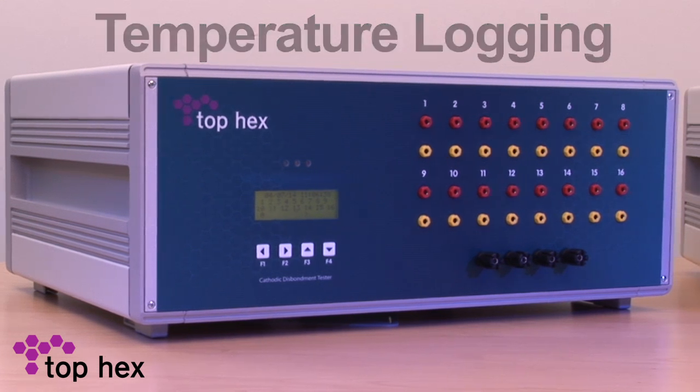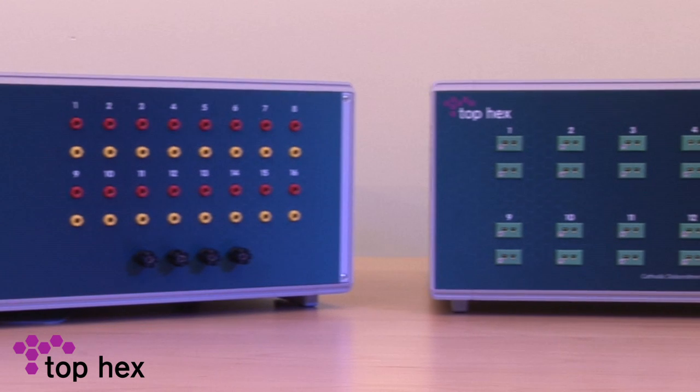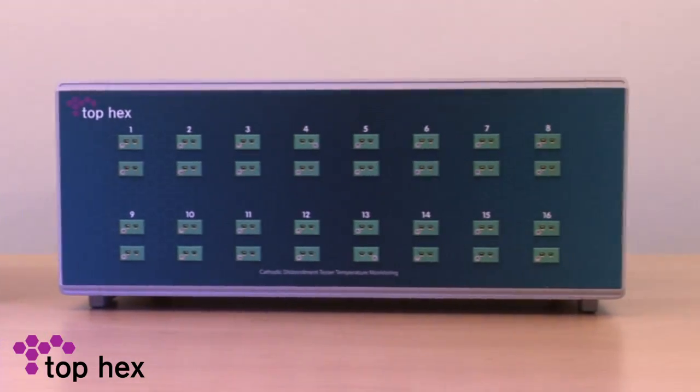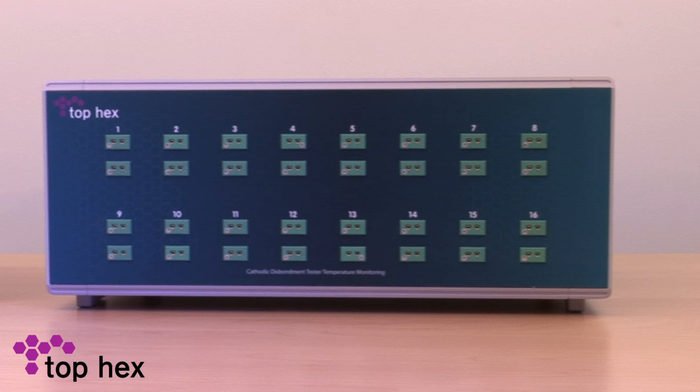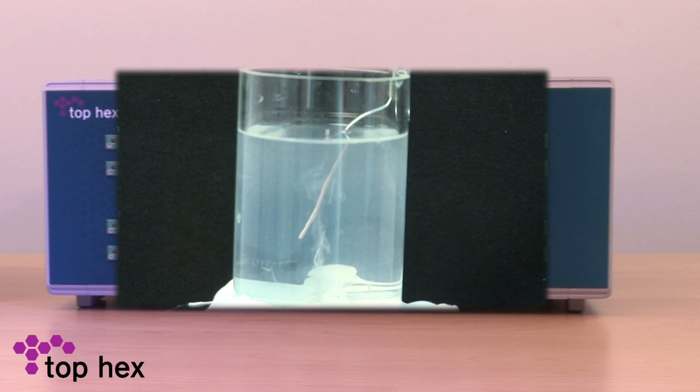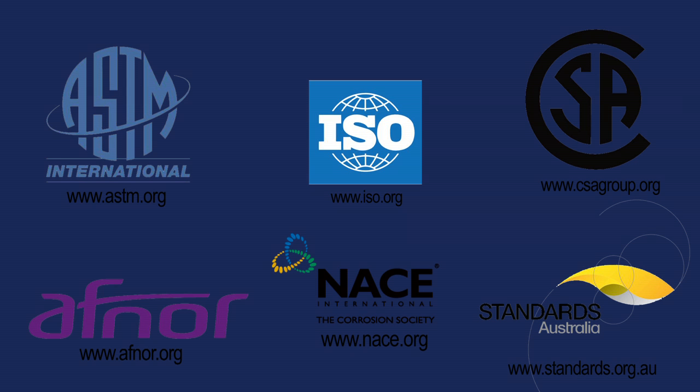The temperature logging module simplifies the process of recording temperatures during a cathodic disbondment test. This is of particular benefit when the test is carried out at an elevated temperature, which is a requirement of many test specifications.